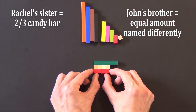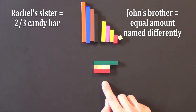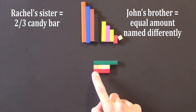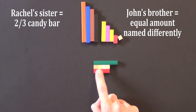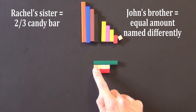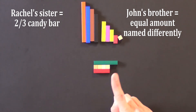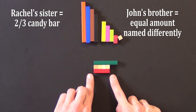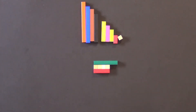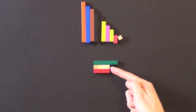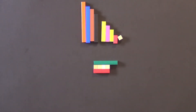But only this amount was equal to what Rachel gave her sister. So how can I name that fraction? The reds represent two-thirds. The whites are sixths. So I count: one-sixth, two-sixths, three-sixths, four-sixths. I know that four-sixths is the same as two-thirds. This means I have just found an equivalent fraction. These two amounts are equivalent — they're equal in value, but they're named differently. Rachel gave her sister two-thirds; John gave his brother four-sixths, but we're really talking about the same amount.